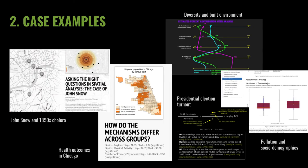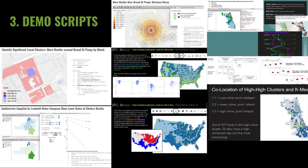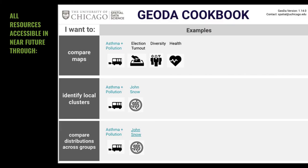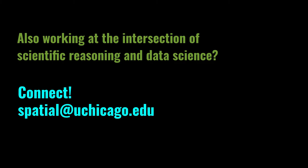Here are snapshots of the case examples everyone developed to illustrate their protocols, including what happens when protocol steps are skipped, as well as the associated demo scripts for replication, plus data and documentation. We'll make these resources and new examples available in a Geoda cookbook in the near future. If you're also working at the intersection of scientific reasoning and data science, or want more details about this project, let us know.